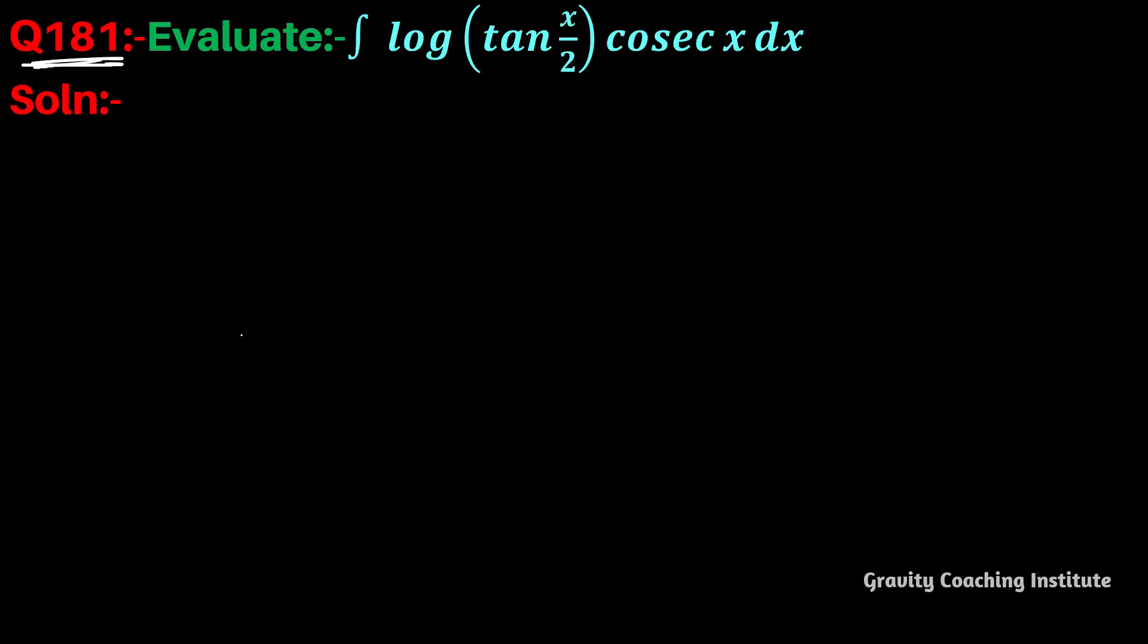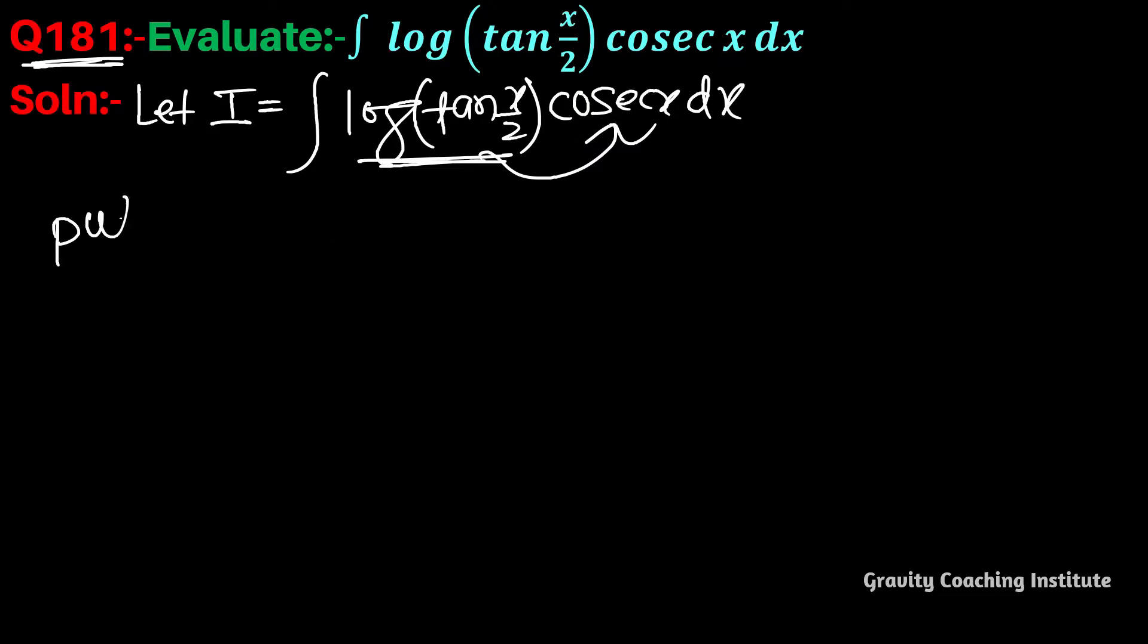Question number 181: Evaluate ∫ log(tan(x/2)) cosec x dx. So first of all, let I = ∫ log(tan(x/2)) cosec x dx. Putting log(tan(x/2)) = t, now